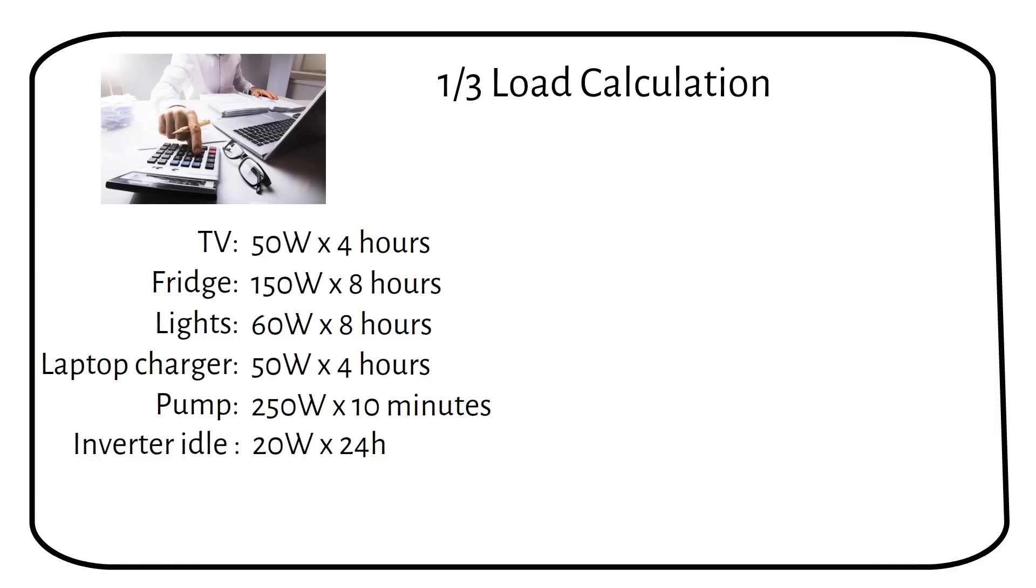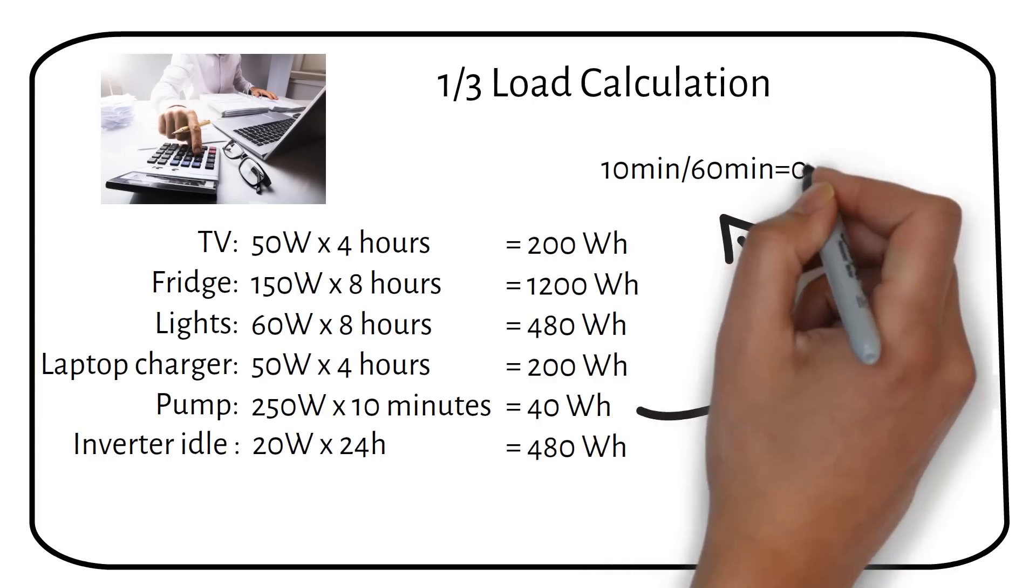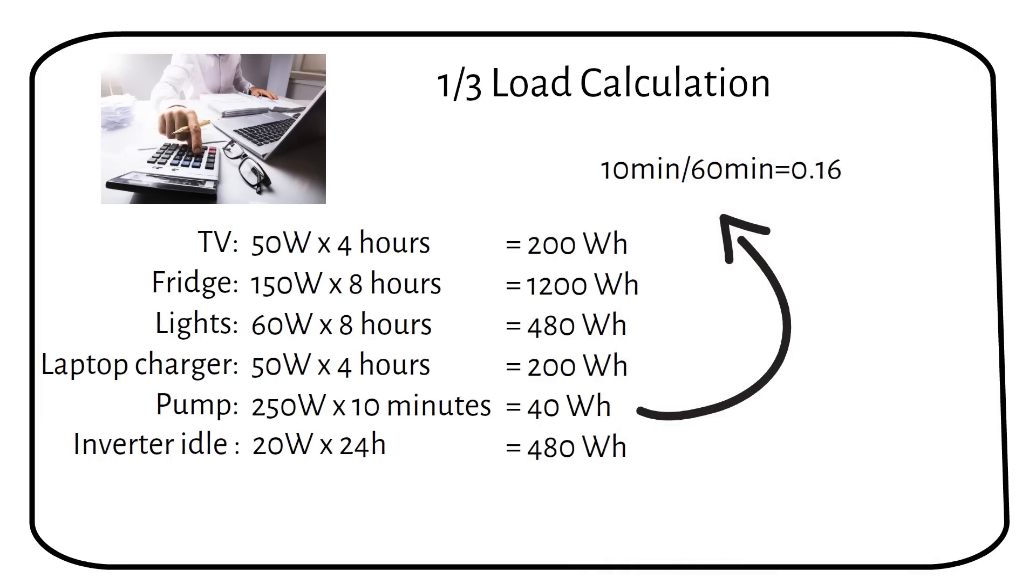We then have to multiply the power consumption by the time we run the device per day. If we have less than an hour, we take the minutes and divide by 60. We then get a decimal value. If the pump is on for 10 minutes a day, we multiply 250 watts by 0.16 to get 40 watt hours.